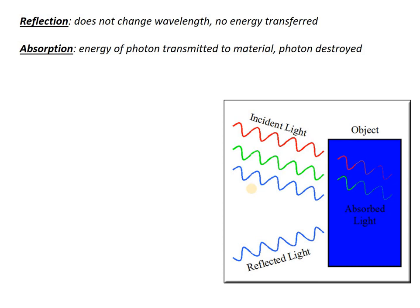The photon is destroyed — and it's so important to understand that. Because as things absorb photons, they actually absorb energy. And in some cases, they get hotter. A great example is black asphalt on the road. It absorbs photons all day; they transfer their energy as they're destroyed, and it heats up the black road surface.